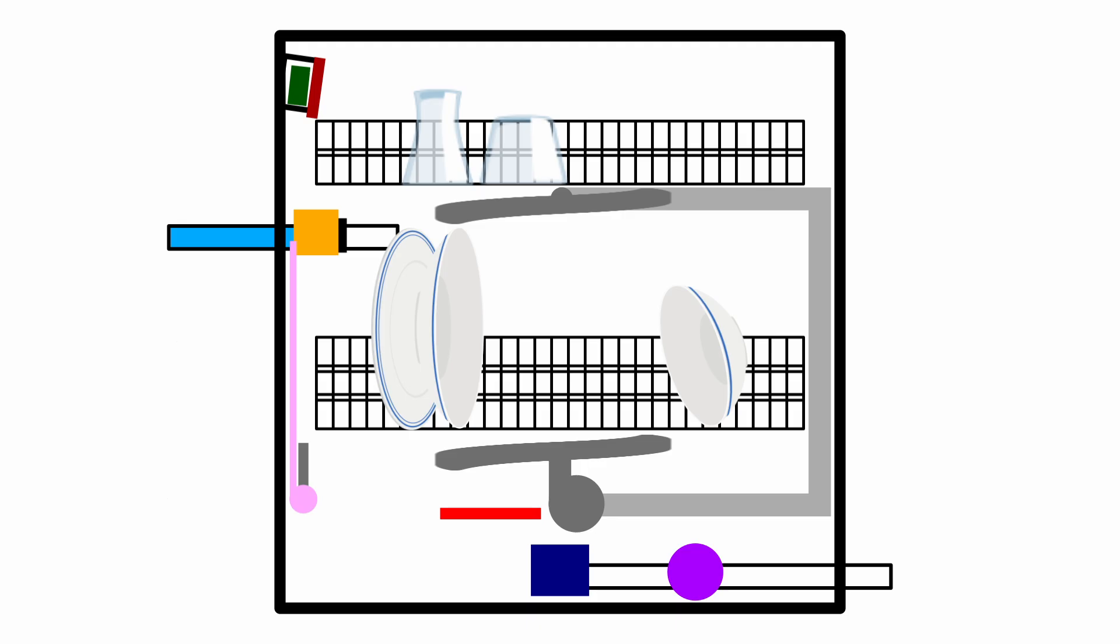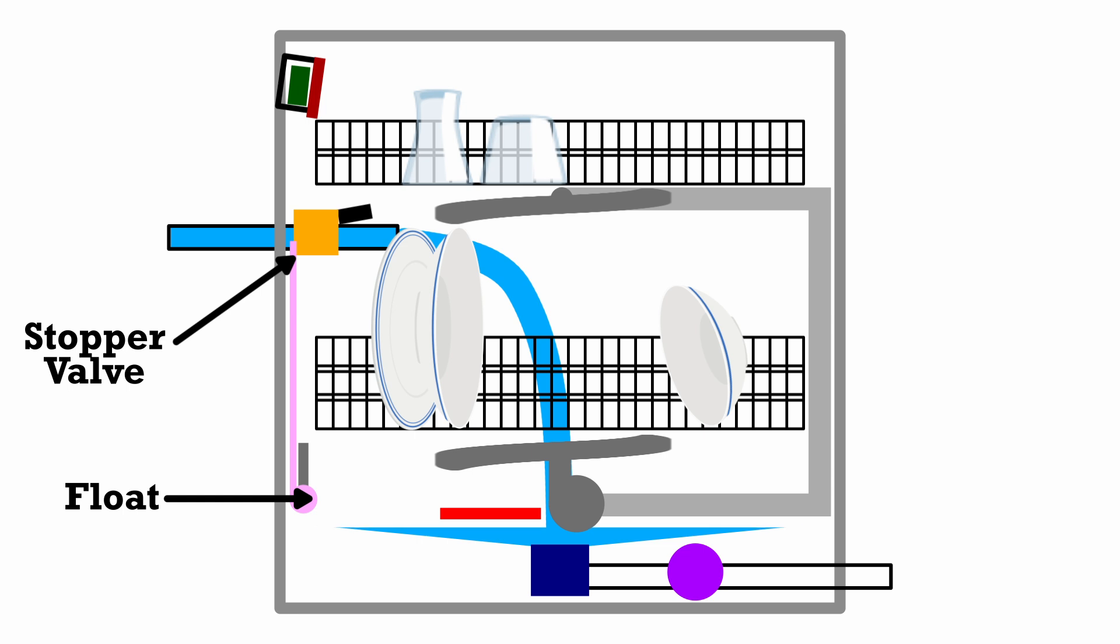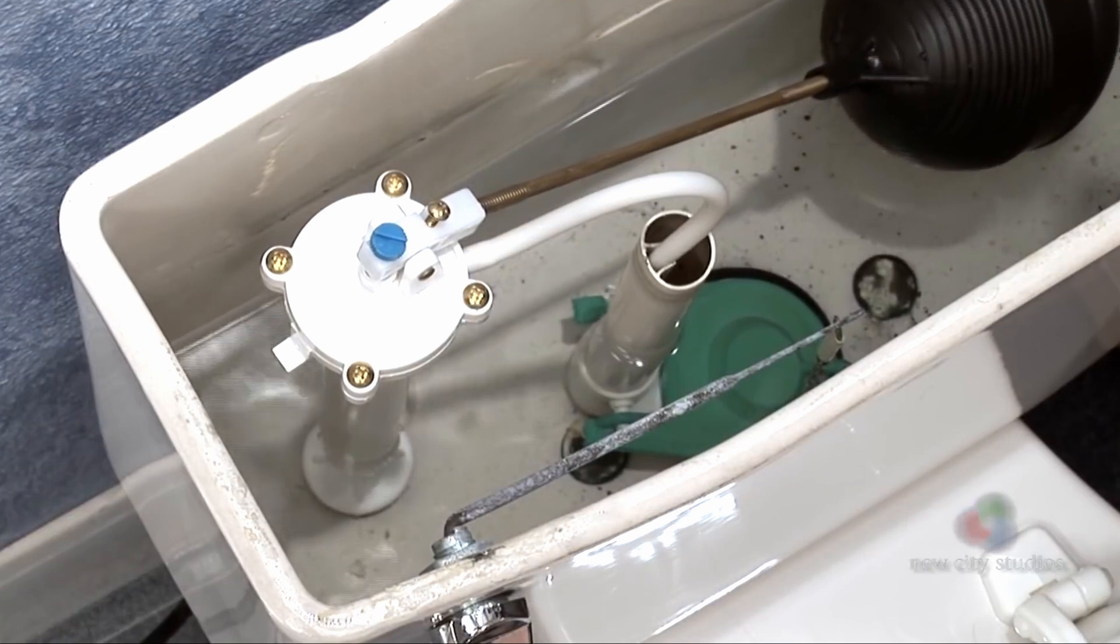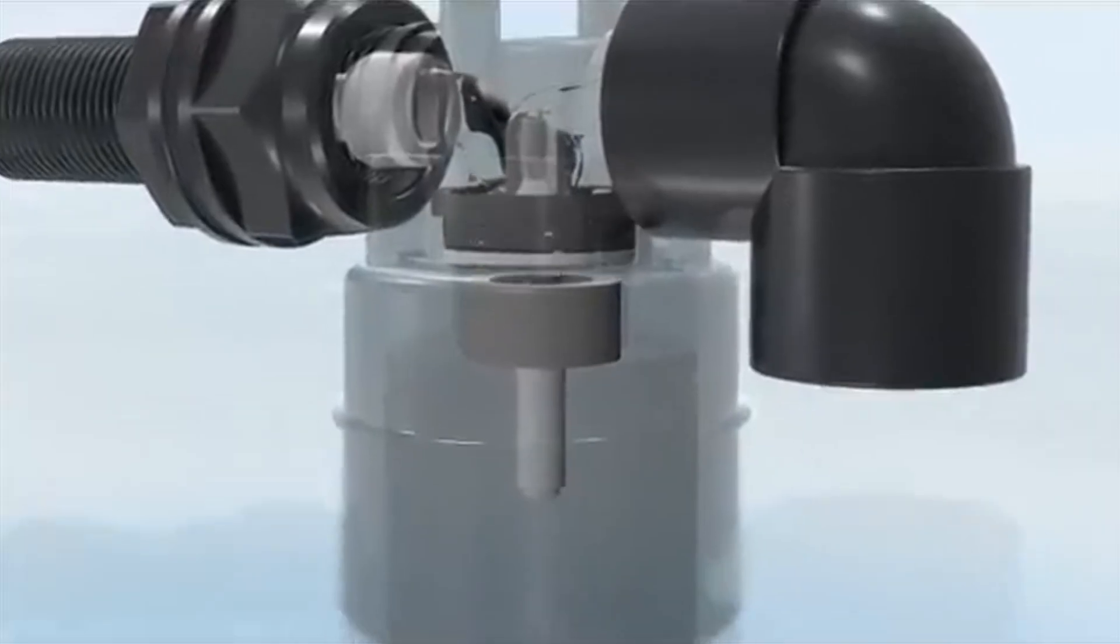This is why there's also usually a backup water level sensor sitting at the bottom of the basin. It uses a float connected to a valve which stops the flow if water exceeds a set level. This is the same mechanism you'll find in a toilet.